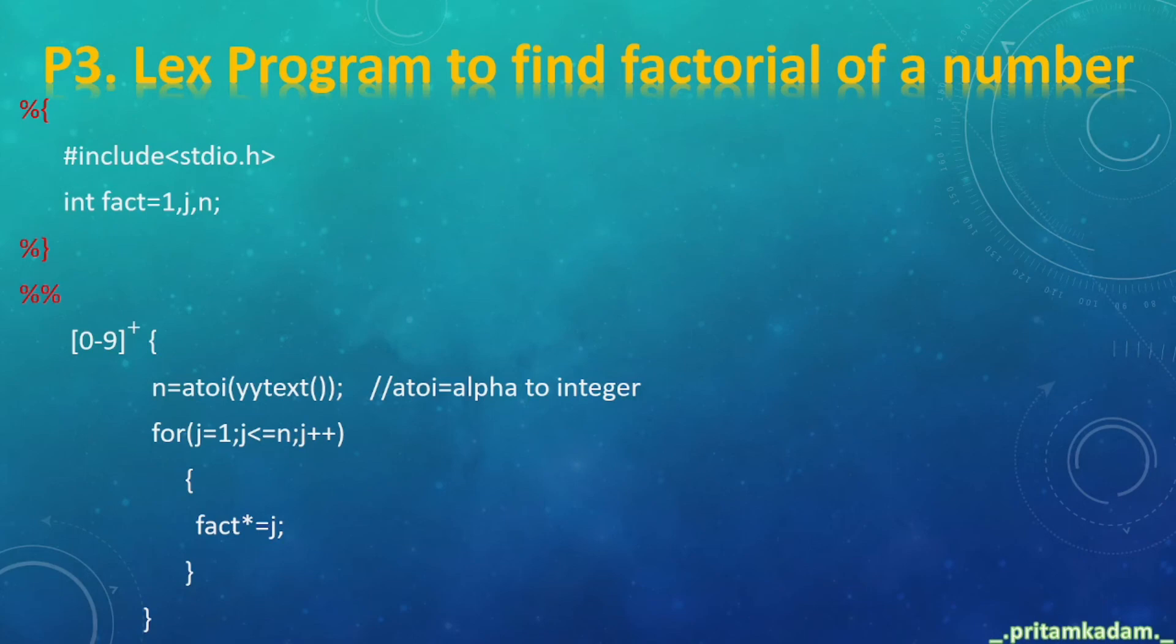In the second section, the integers will be from 0 to 9 plus for one or more, and equals to atoi, means alpha to integer, because yytext returns string. Equals to 1, j less than equal to n, j++, fact*=j. So fact variable is containing the value of the factorial of the specified number given by the user.